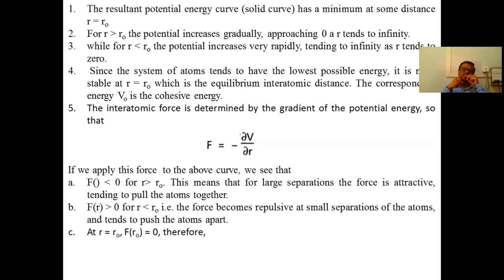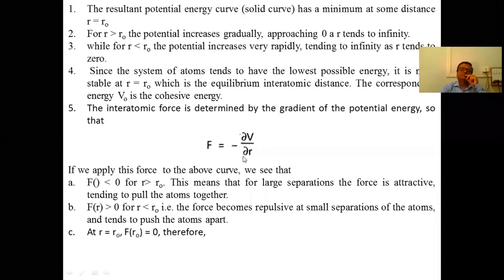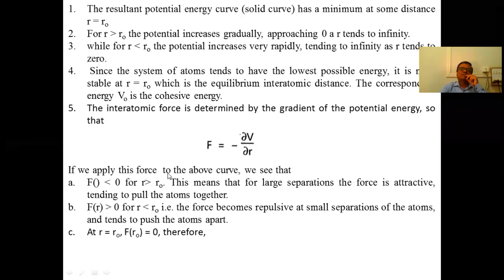The interatomic force is determined by the gradient of potential energy: F = −∂V/∂R. The negative sign is because if we decrease R, the potential energy increases — this is the potential gradient.